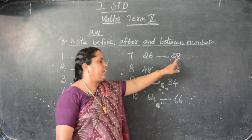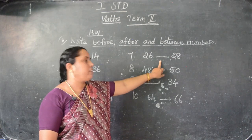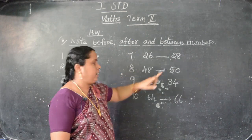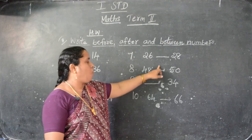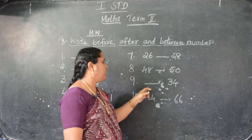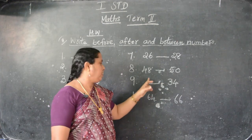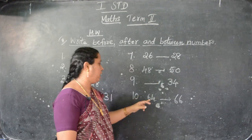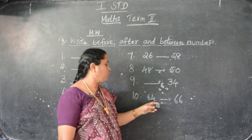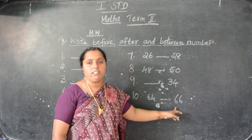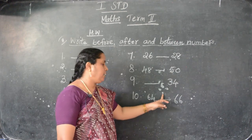Here see: 26, 28. In between, what number you have to write? Between number. What number you have to write? 27. Here see: 48, 50. In between, what number we have to write? 49. Here see: 34. Before 34, what number comes? 33. So here you have to write 33. Here see: 64, 66. In between 64 and 66, what number we have to write? 65.